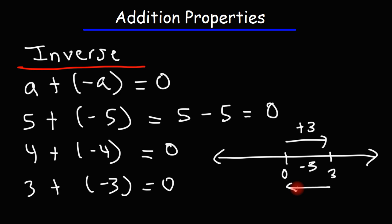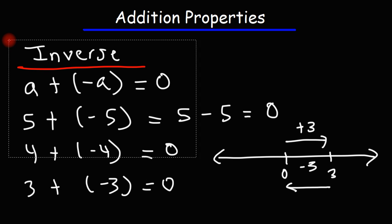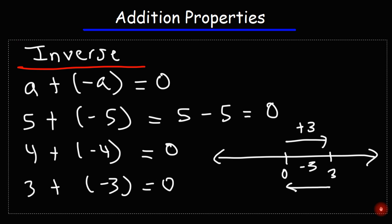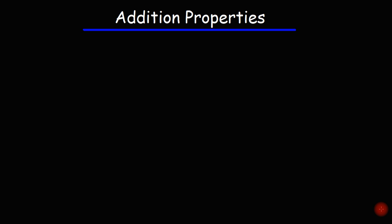A plus negative A cancels each other out. So those are the properties of addition that you may be tested on in a typical high school or college algebra course. So let's review the rules that we've learned.